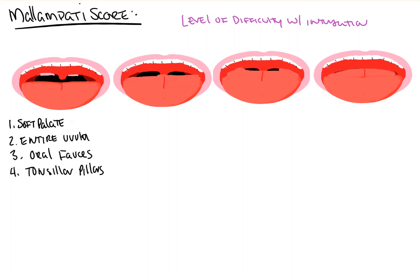I want to define a couple of these, as the first time I heard oral fauces and tonsillar pillars, I had no idea what we were talking about. The fauces is part of the oropharynx in the back of the throat — it's the space found back here and back here. It's delineated superiorly by the soft palate, laterally by the palatoglossal and palatopharyngeal arches, and inferiorly by the tongue. So you're really looking, for all intents and purposes, to see the back of the oropharynx.